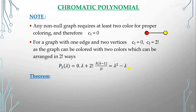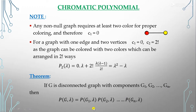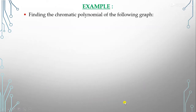Now one theorem: if we have a disconnected graph G with components G_1, G_2, …, G_n, then the chromatic polynomial of G is the product of the chromatic polynomials of its components. That is, P_G(λ) = P_G1(λ) × P_G2(λ) × … × P_Gn(λ). We find the chromatic polynomial of each component separately and then multiply them together.